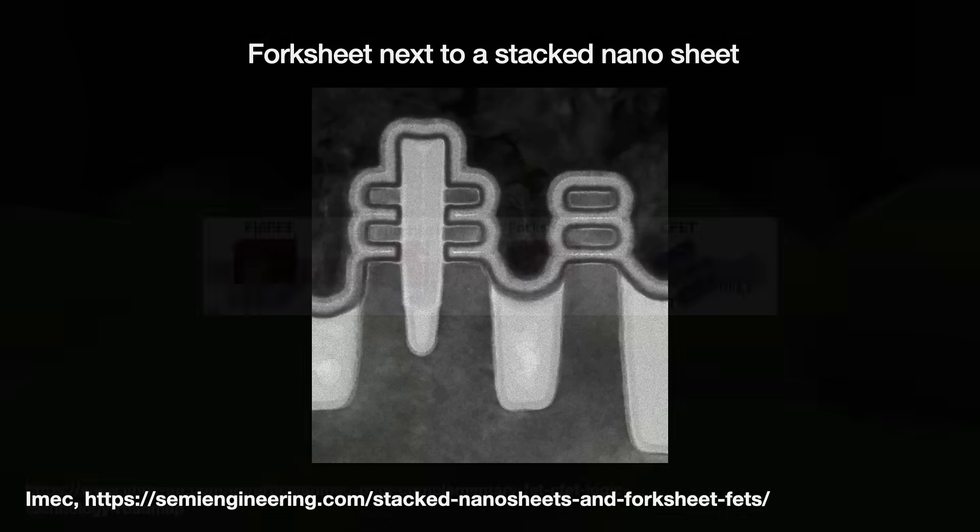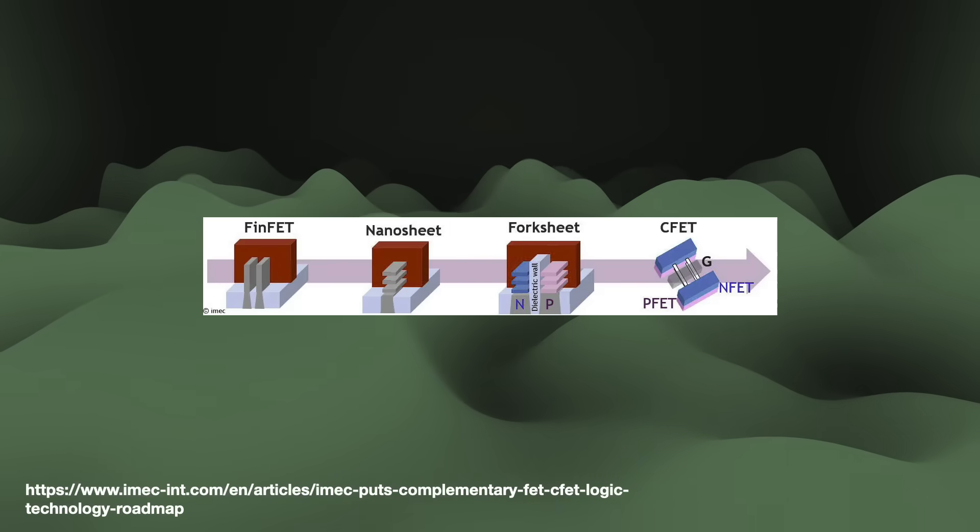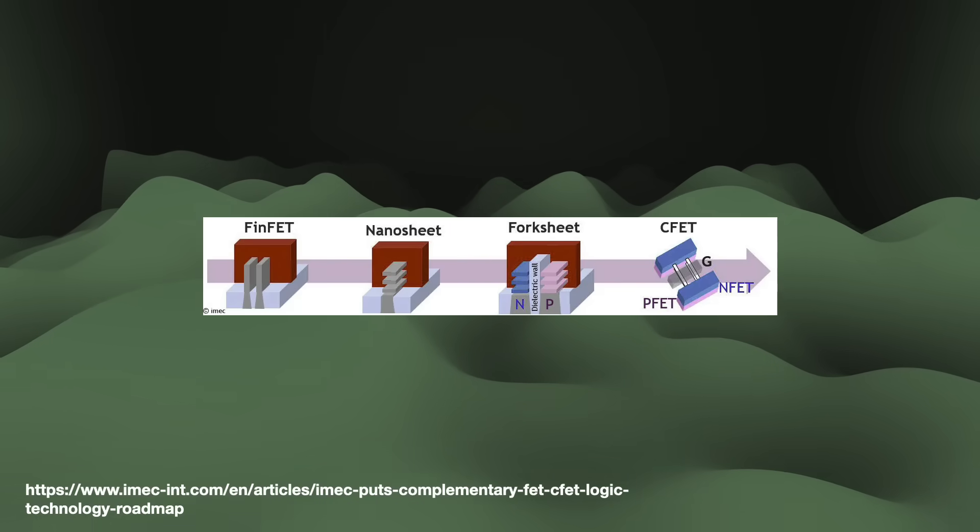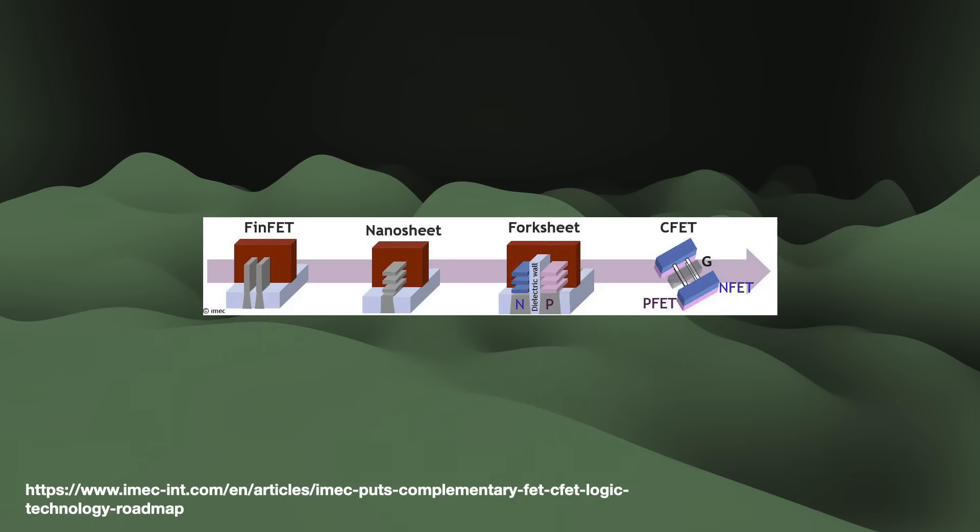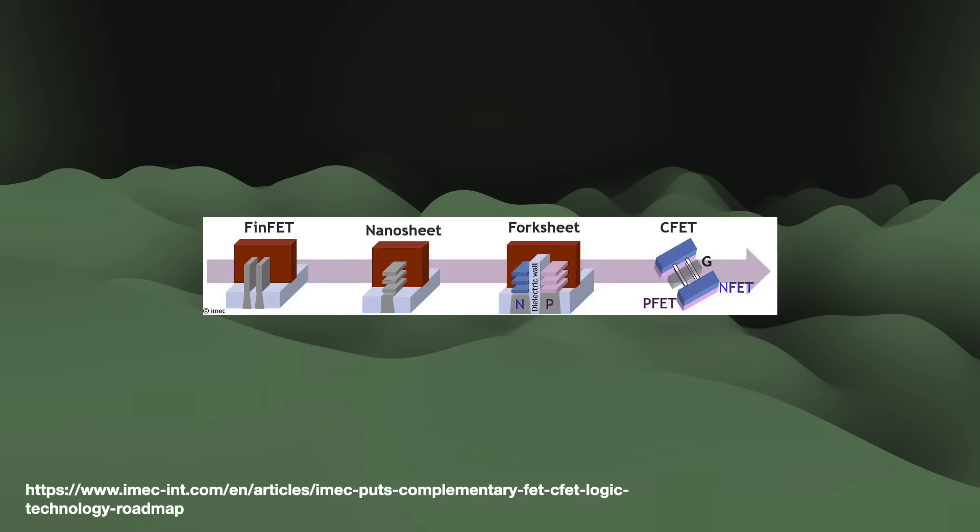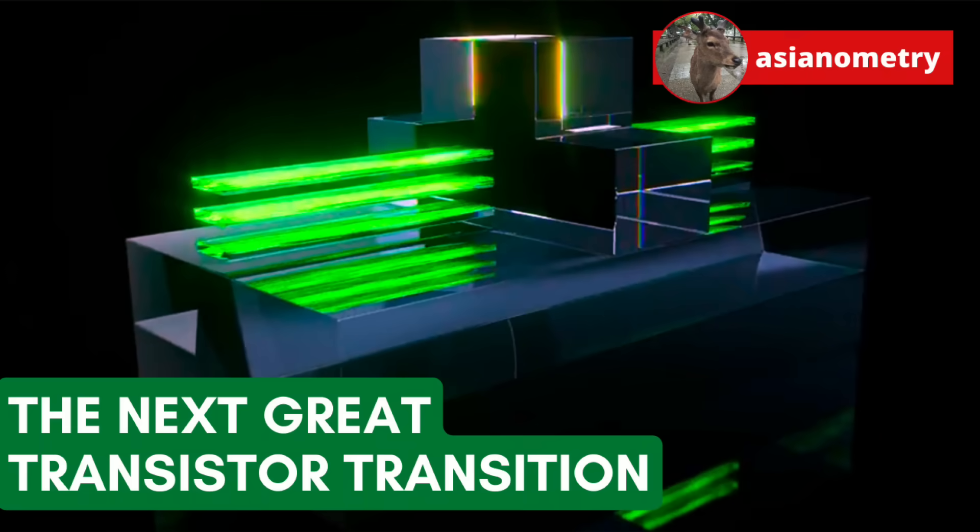And then after that, IMEC has presented the complementary FET, or CFET, where we fold the nanosheets or the fins on top of one another. This one would make a true 3D transistor. Anyway, the industry has not even started thinking about bringing these things into production. But the work shows that people are forever looking ahead. Right now, though, we look towards N2 and its brethren. Coming in 2025.